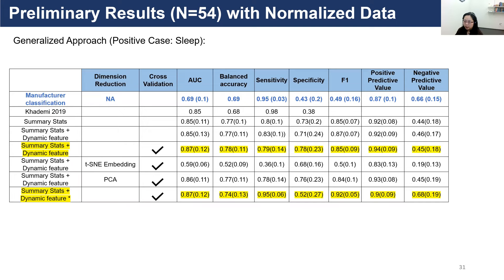For the generalized approach — where we combined all participants' data to develop a general algorithm and then applied it to each participant's test data — we again found it helpful to include dynamic features. However, due to the much larger dataset, the improvement is less obvious. It is also helpful to include cross-validation and a threshold that takes imbalanced data into consideration, resulting in even better negative predictive value.